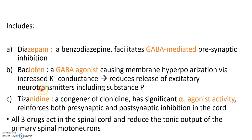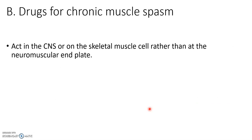Tizanidine is a congener of clonidine with significant alpha-2 agonist activity. It reinforces both presynaptic and postsynaptic inhibition in the cord. This inhibition of the synapse in the cord reduces the transmission of impulses, thereby reducing muscle spasm.